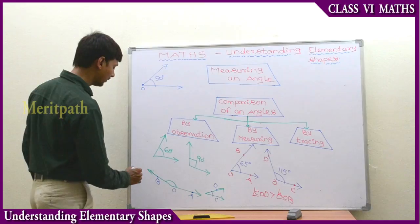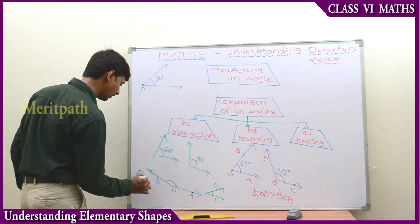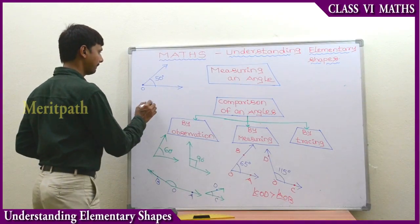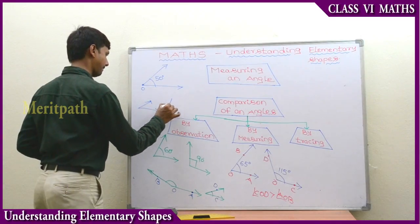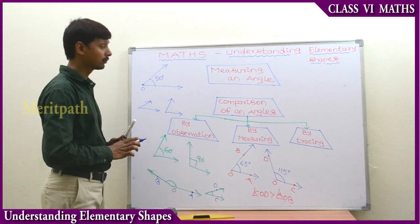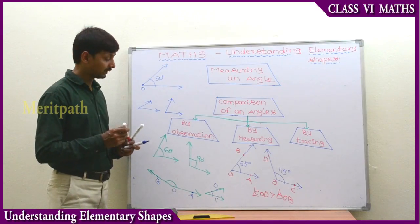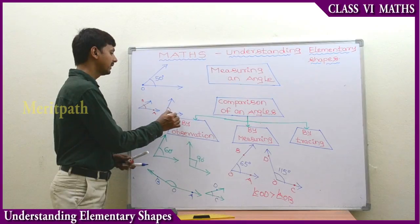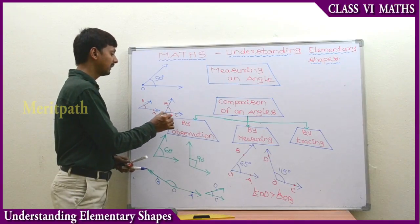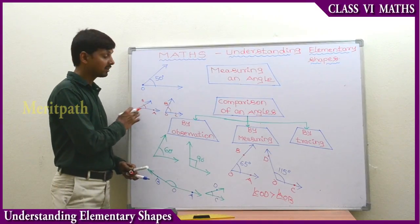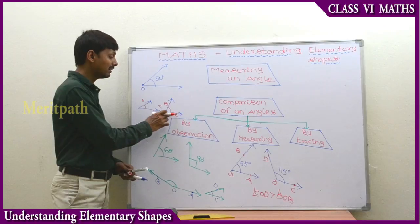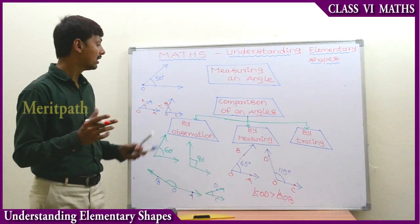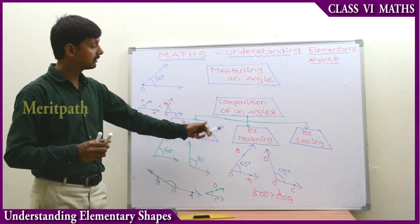So if two acute angles are present, for example this is one angle and the second angle - both are acute angles. We can say that angle BOC is greater than angle AOB. By observation we can say this angle BOC is greater than AOB. This is the comparison of two angles using the observation method.